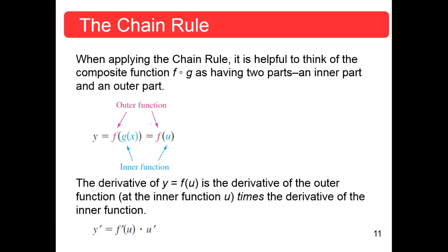When applying the chain rule, it is helpful to think of the composite function f of g as having two parts — which is how we always think of composite functions. You have an inner part g and an outer part f. So y equals f of g of x, which is f of this intermediate variable u, where u equals g of x. The derivative of y equals f of u is the derivative of the outer function at the value of the inner function u, times the derivative of the inner function, u prime.